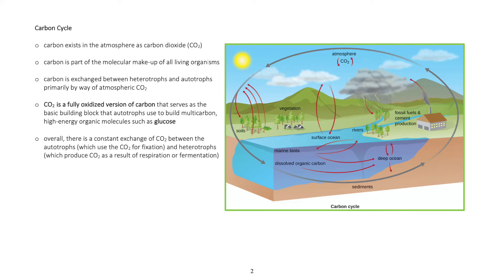Carbon Cycle: Carbon exists in the atmosphere as carbon dioxide. Carbon is part of the molecular makeup of all living organisms. Carbon is exchanged between heterotrophs and autotrophs primarily by way of atmospheric carbon dioxide.